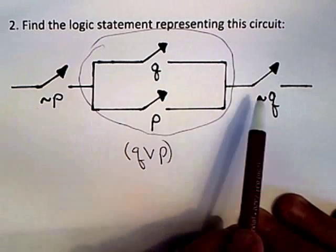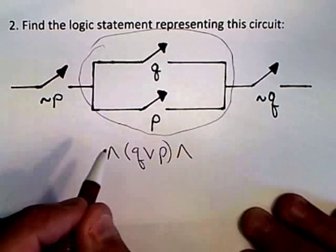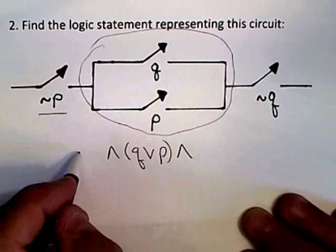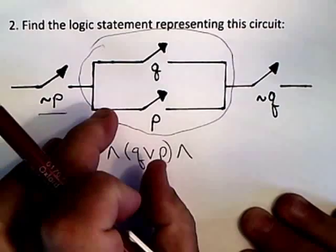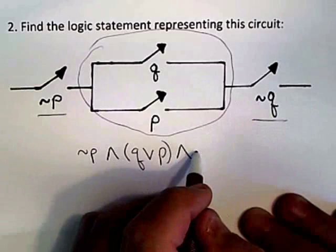So that takes care of this chunk. And then everything else is in line with each other, so they're going to be ANDs. You're going to have a series of ANDs to hook these three things together. So you've got NOT P, ANDed with this chunk, ANDed with a NOT Q.